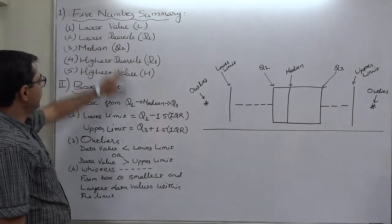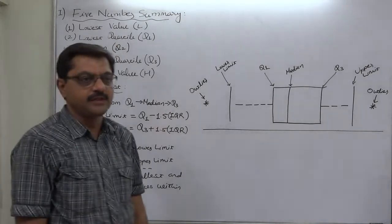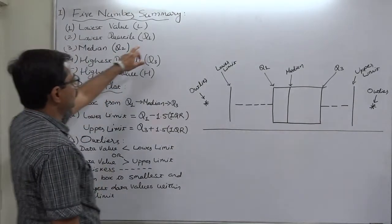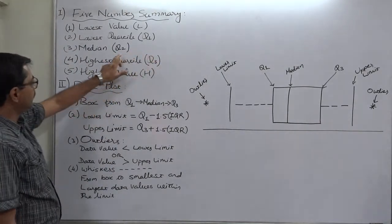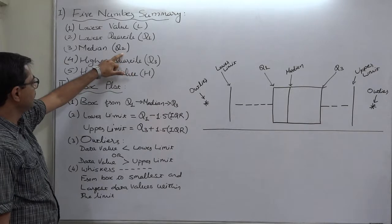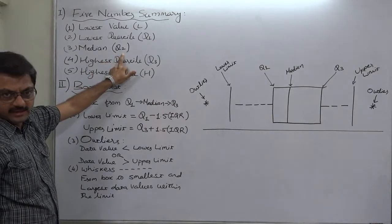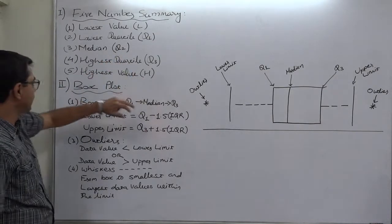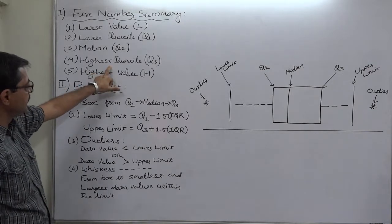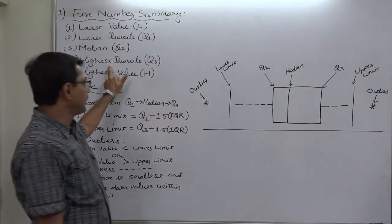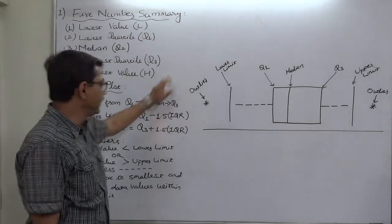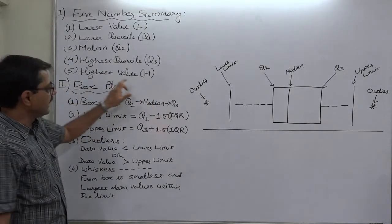In the list, the second item is lowest quartile or the first quartile, known as Q1. The third number in the list, third item in the list is median. We know it as Q2 or second quartile. The fourth item is highest quartile or the third quartile, known as Q3. And the last one is highest data value.